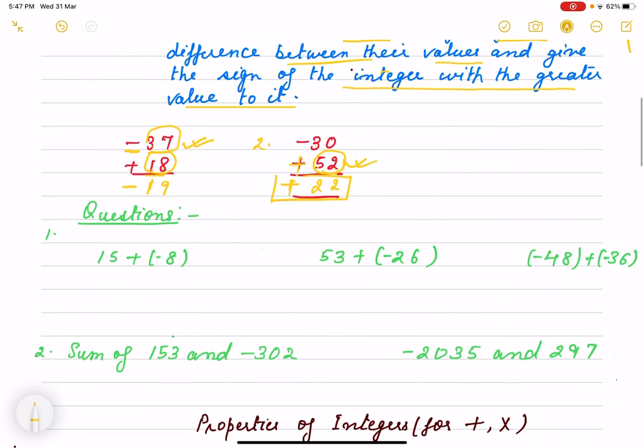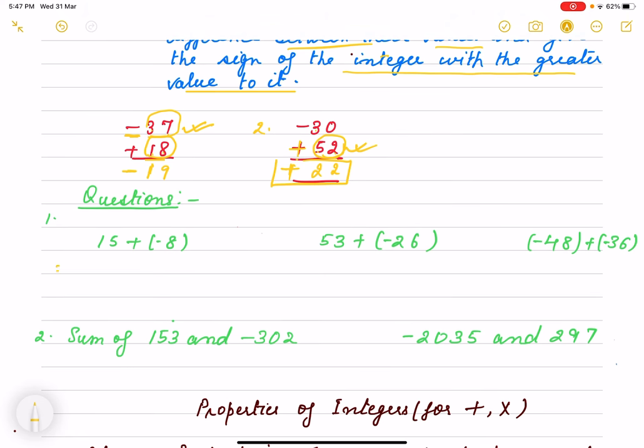Suppose I'm giving you questions. Just check: 15 plus the sum of 15 and -8. We have to add. There is one positive and one negative. What do we do? We take the difference. What is the difference? 7. But which sign will we write? It is plus. Nothing is written means plus, and here minus. So which sign will be there? +7, that will be the answer. Same way here, +53.